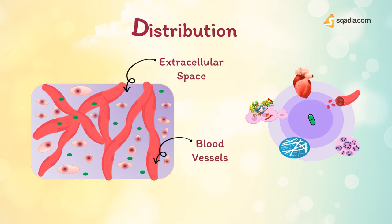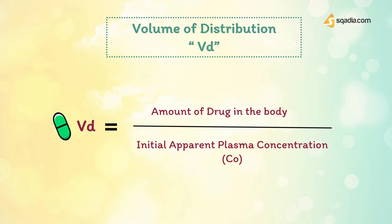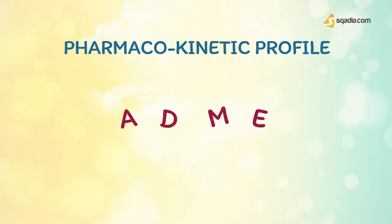The apparent volume of distribution, Vd, is the calculated pharmacokinetic space in which a drug is distributed. Vd equals the amount of drug in the body divided by the initial apparent plasma concentration, or C0. It is defined as the fluid volume required to contain the entire drug in the body at the same concentration measured in the plasma, calculated by dividing the dose entering the systemic circulation by the plasma concentration at time zero, C0.